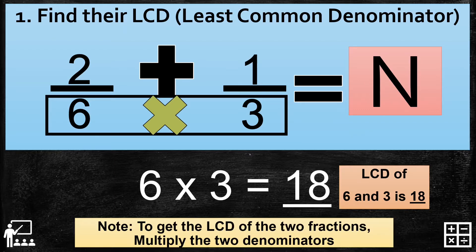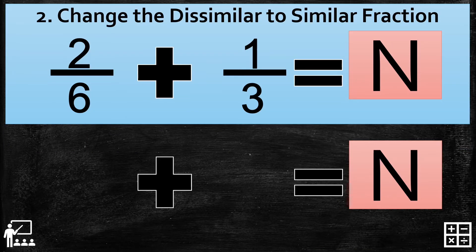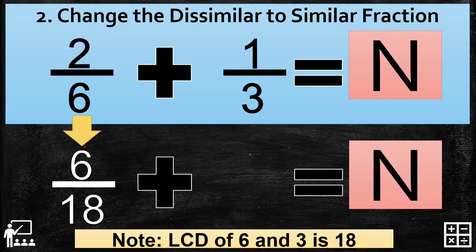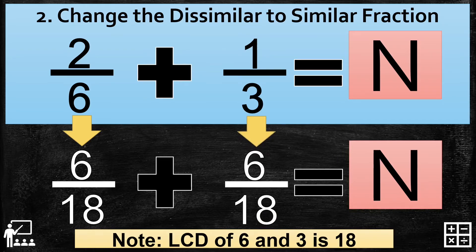Let's proceed to step 2, which is to change the dissimilar to similar fractions. The LCD of 6 and 3 is 18, so our new denominator is 18. So 2 over 6 becomes 6 over 18, while 1 over 3 becomes 6 over 18.